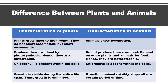Difference between plants and animals: Plants grow fixed to the ground — they do not show locomotion, but show movements. Animals show locomotion. Plants produce their own food by photosynthesis, hence they are autotrophic. Animals do not produce their own food; they depend on other plants and animals, hence they are heterotrophic. Chlorophyll is present within plant cells and growth is unlimited throughout their lifespan. Growth in animals visibly stops after a certain period of time.